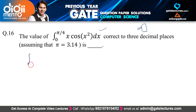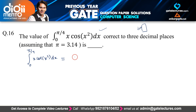We have the integration from 0 to π/4 of x·cos(x²) dx. Mathematics is one of my weakest subjects, so if I make any mistakes just let me know, but I think I have given the question correctly. So here we have the integration of x·cos(x²) dx — this is the equation.